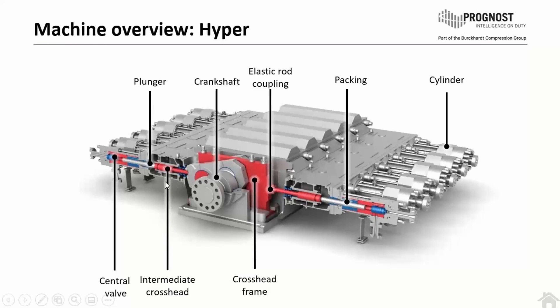Here we see the complete hyper machine. In this case, 12 cylinders. We have different parts like central valve, plunger itself, intermediate crosshead, crankshaft, crosshead frame, elastic rod coupling, packing, and the cylinder itself.